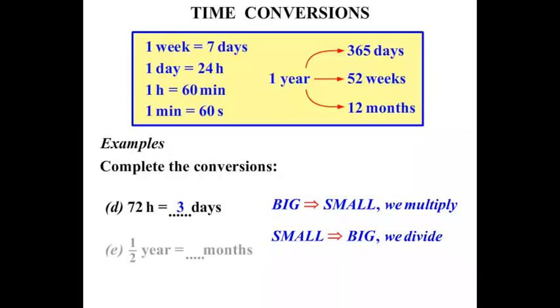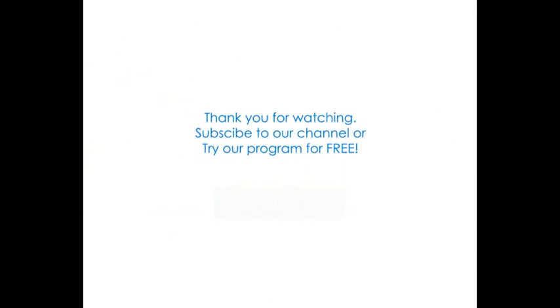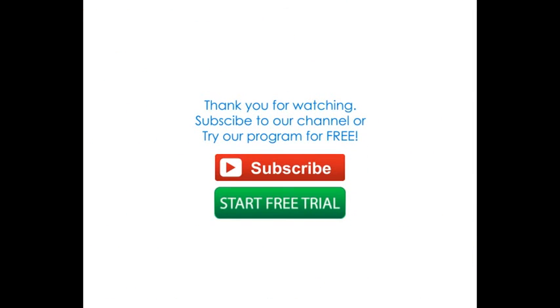The next one we've got. Half a year equals how many months? Well years and months. What's the connection? One year is 12 months. So we're going from years to months. So we're going from big to small. So we multiply. We multiply by the 12. So we've got a half times 12. In other words what's a half of 12? A half of 12 is 6. So half a year is the same as 6. Thank you.